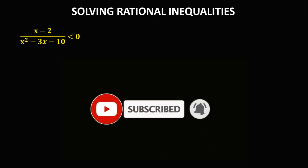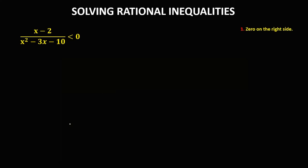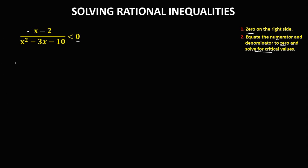Let's solve rational inequalities. First, we need to check the given — since the right side is equal to zero, we can equate the numerator and denominator to zero to find the critical values. For the numerator, we have x minus 2 equals zero, so x equals positive 2.